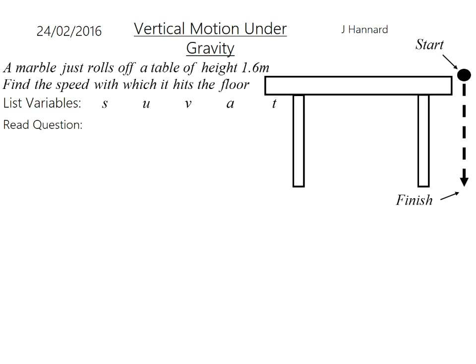Read the question. Marble just rolls off a table at a height 1.6 metres, so it's starting at a 1.6 height, and it's going to end up at 0, so it's going to be a minus 1.6 there, because it's moving down. Your u equals 0, because it just rolls off the table, so nobody's throwing it or anything. It's literally just rolling off, and your a is minus g, because it's moving downwards, it's accelerating towards the Earth, so it's minus 9.8.